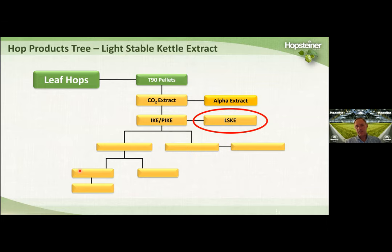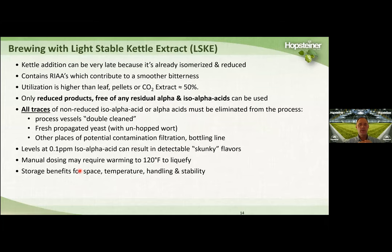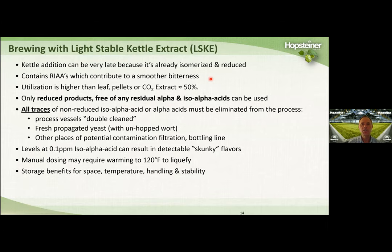The next isomerized kettle extract product is a light-stable isomerized kettle extract we call LISKE. To make LISKE, we first make IKE, then isolate the iso-alpha acids in the IKE product and treat them with sodium borohydride to reduce the iso-alpha acids into what we call rho iso-alpha acids. We add that rho back to the beta acid and hop oil from the IKE product. Essentially we're making an IKE product that's been reduced so it's light stable. A lot of craft and large brewers who use this product like it for its smooth bitterness.